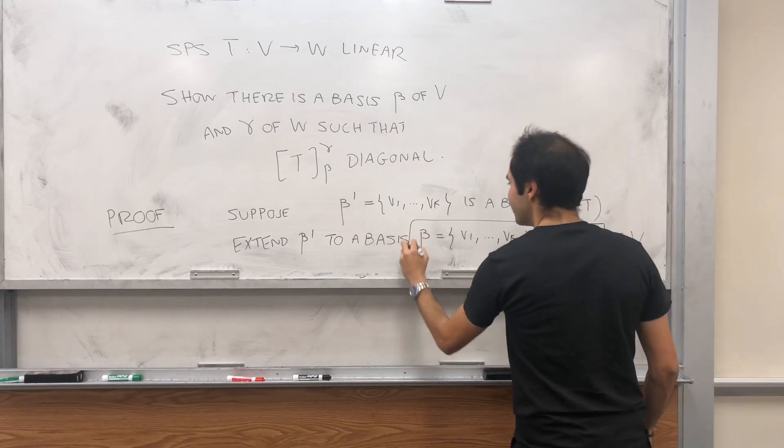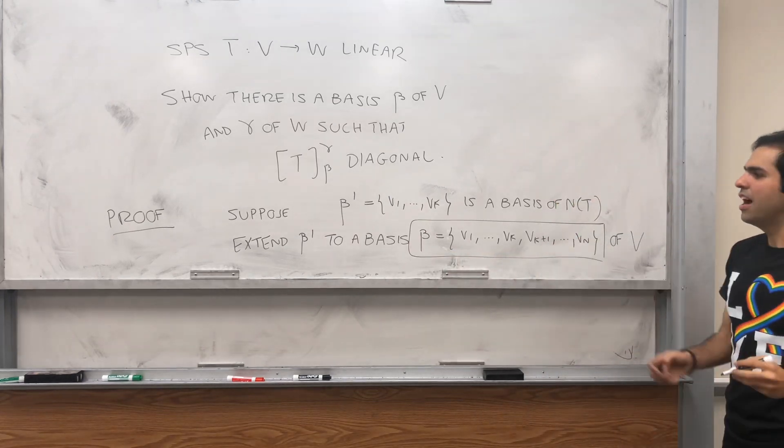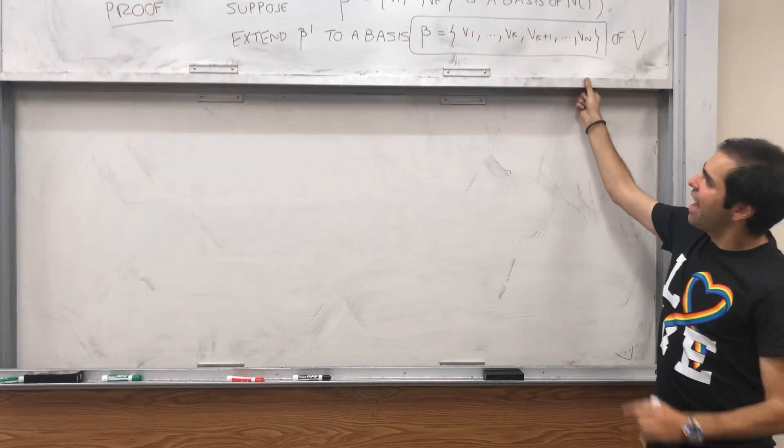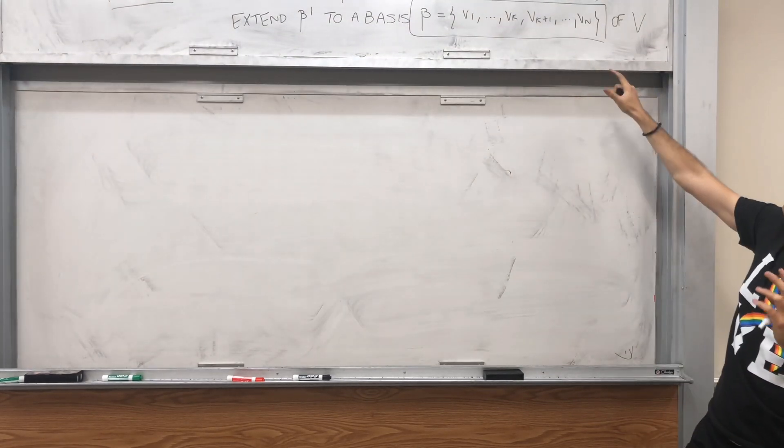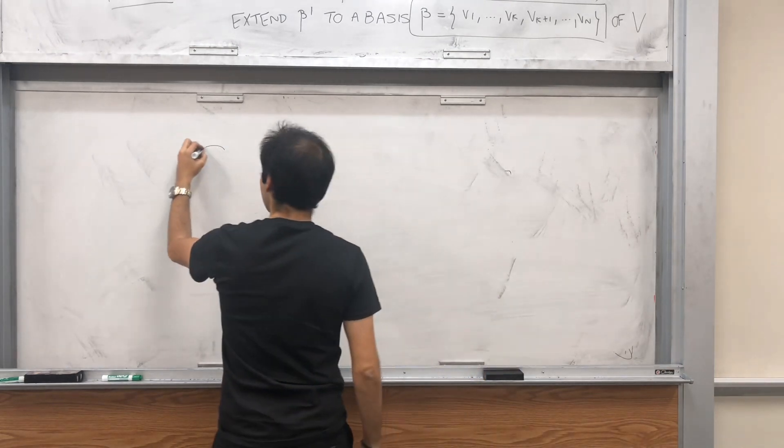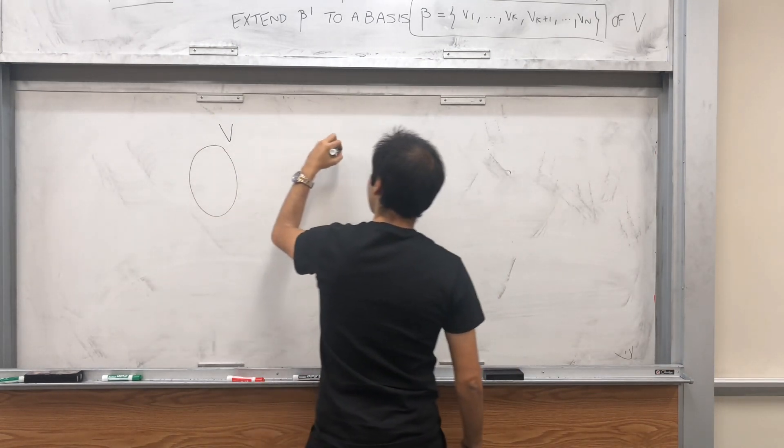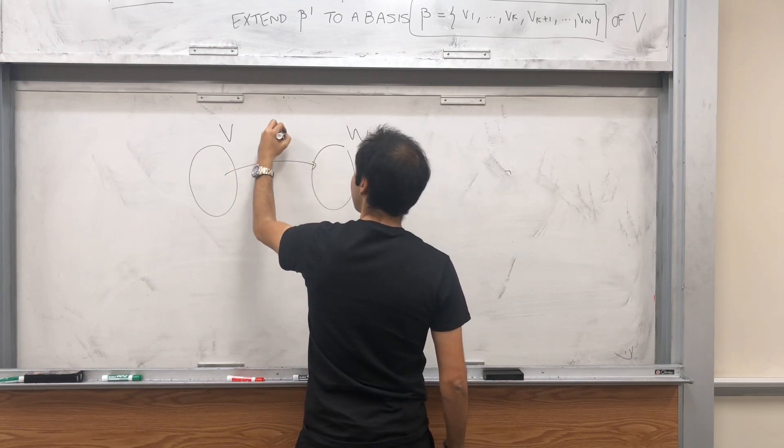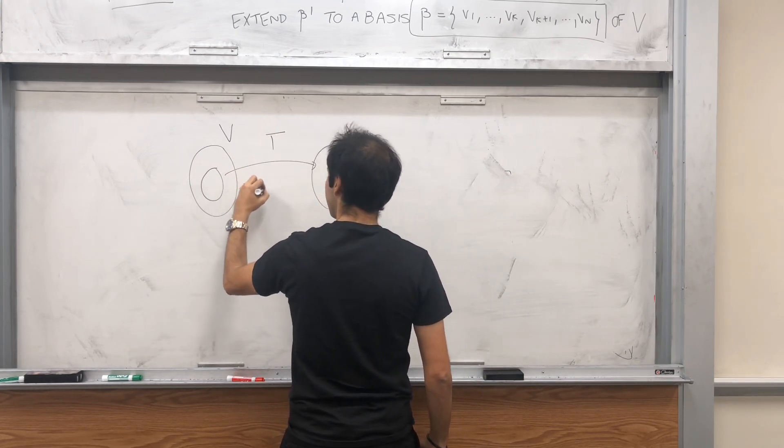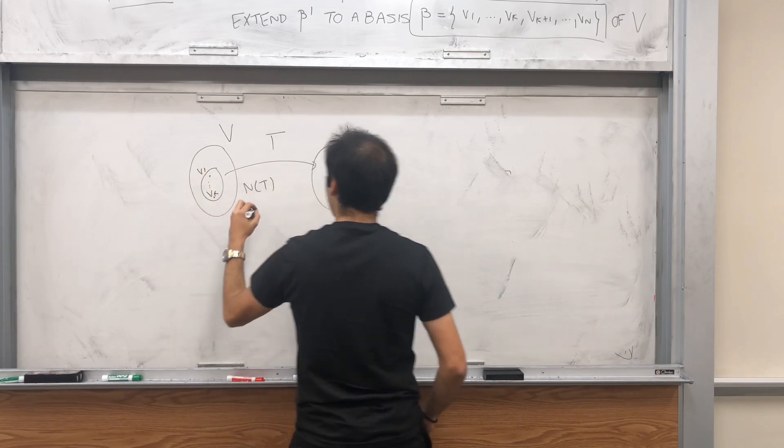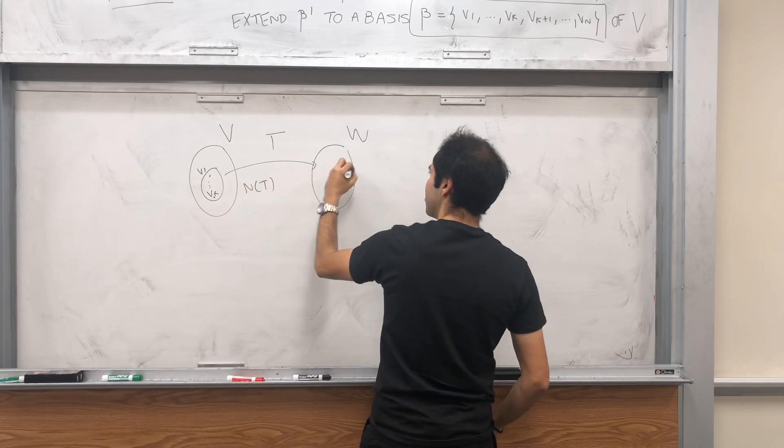So the nice thing is this is first of all your basis for V. So we're like halfway done. And then I'm not going to repeat this, but what's going on? We have our basis V and we have a vector space V. We have our vector space W and we have T. On the one hand, we have the null space. And we know our basis is v1 up to vk.